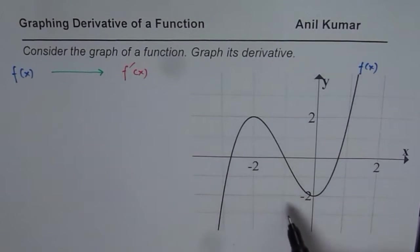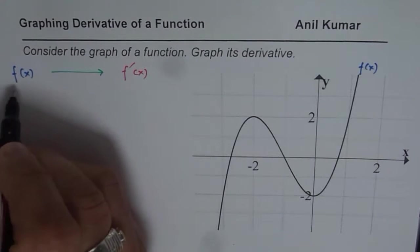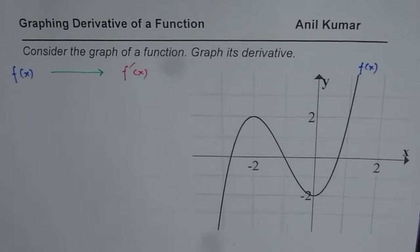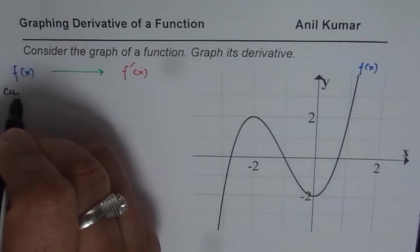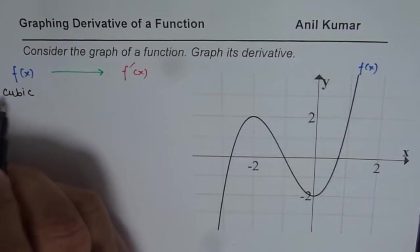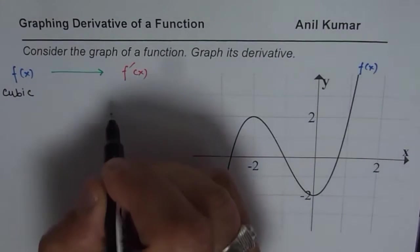One, nature of the graph. So first thing which we notice here is that the function itself is cubic. So we have a cubic function. So if the function is cubic, the derivative should be quadratic.